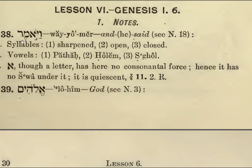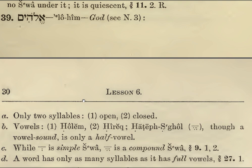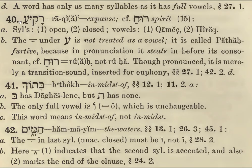VAYYOMER ELOHIM — God. Just a reminder: ELOHIM has two syllables. The first is open, the last is closed HIM. The vowels here: we have the CHOLEM, the CHRIK, and what's called the CHATEF SEGOL, which is a very short E sound but it's only half a vowel. This is why ELOH is one syllable — ELOHIM. A word only has as many syllables as it has full vowels, not half vowels.